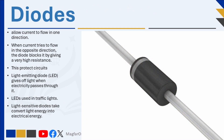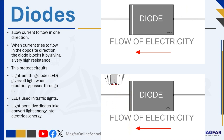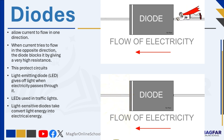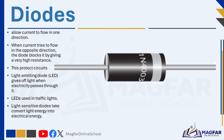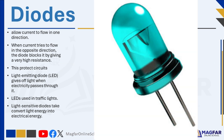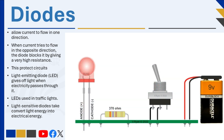Another important component is the diode. Diodes are special electrical parts that only allow current to flow in one direction. When current tries to flow in the opposite direction, the diode blocks it by giving a very high resistance. This helps protect circuits and ensure that electricity flows the right way. Diodes are not made from metals — they are made from materials called semiconductors. A type of diode called a light-emitting diode, or LED, gives off light when electricity passes through it. You can see many LEDs in traffic lights.